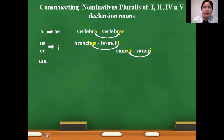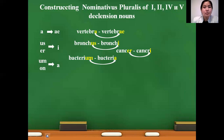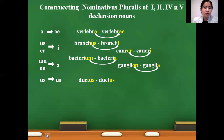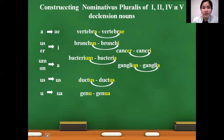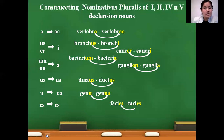In second declension neuter, endings -um and -on we change to ending -a. So: bacterium, Nominativus Pluralis — bacteria; ganglion — ganglia. In fourth declension masculinum, endings are -us/-us, so ductus singular and plural forms are the same. In fourth declension neuter, ending -u we change to -ua for constructing Nominativus Pluralis. For genu — genua. In fifth declension, ending -es has no changes, so singular and plural forms are the same: facies — facies.